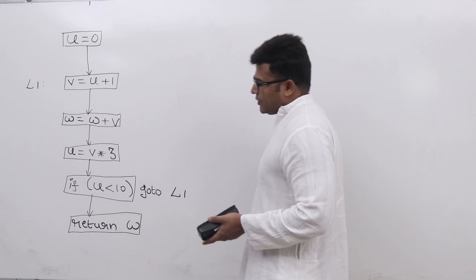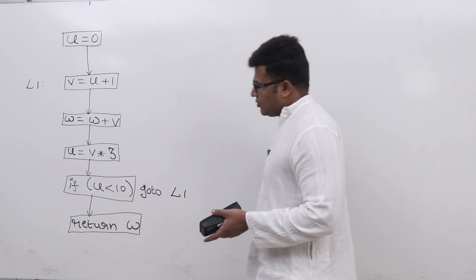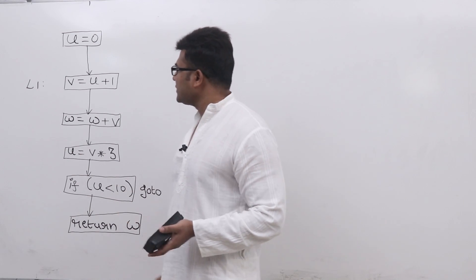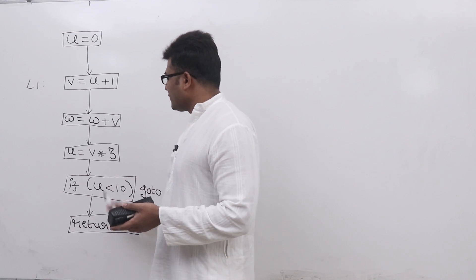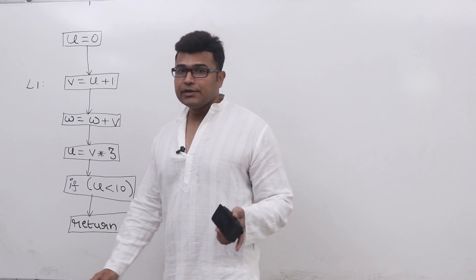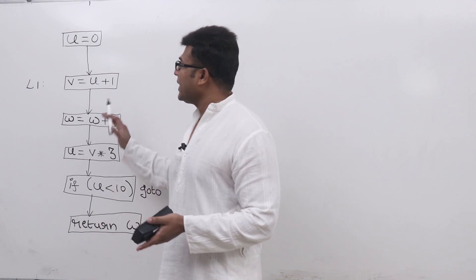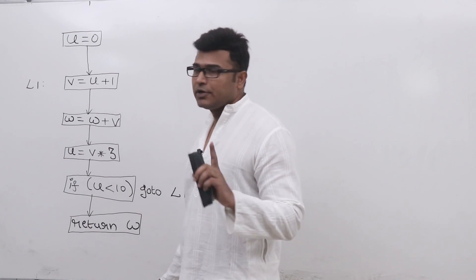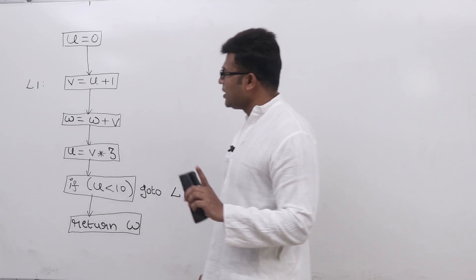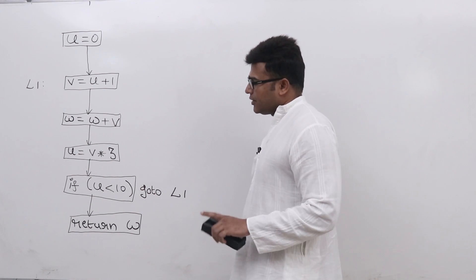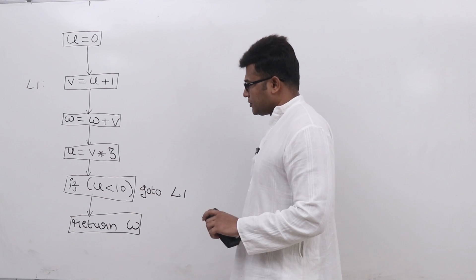So whenever there are goto statements, wherever the flow is not a simple straight line, then it is better to draw a diagram and analyze it so that it will be easy for you to see what are all the points where a variable is used.